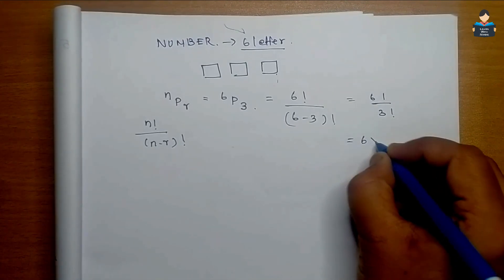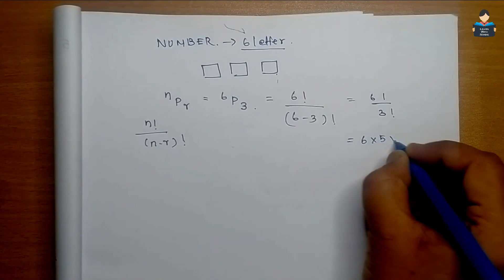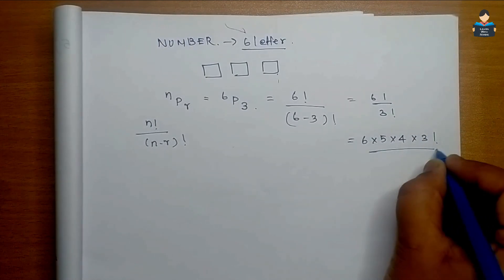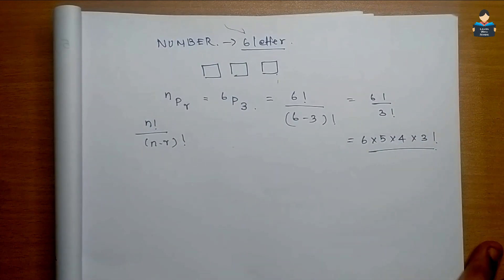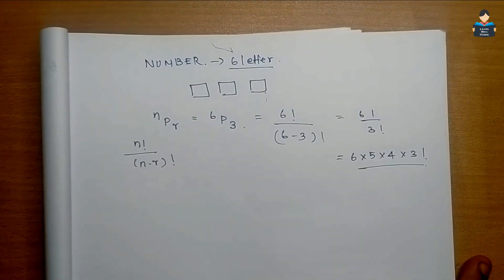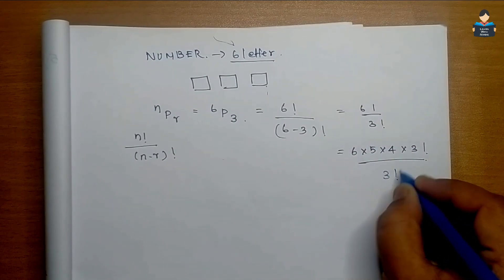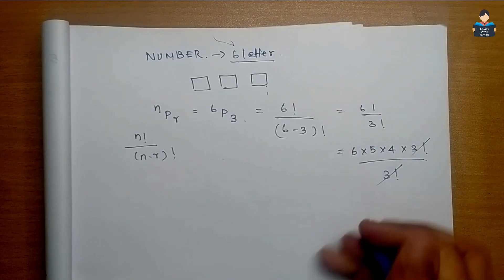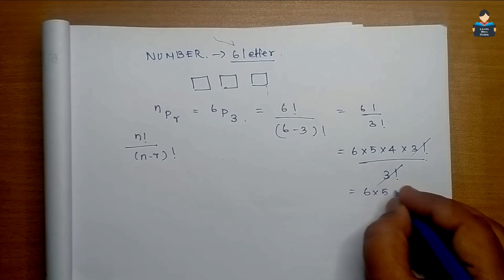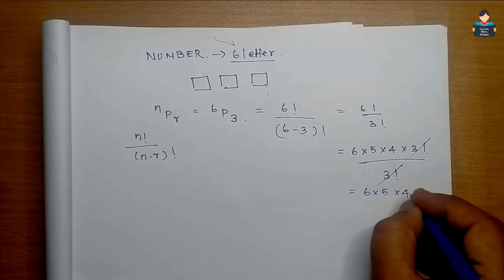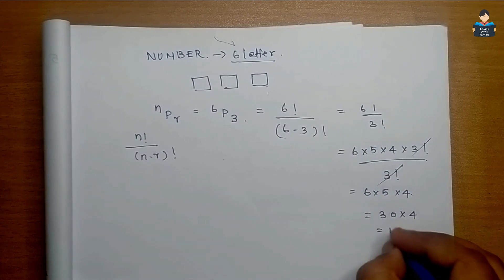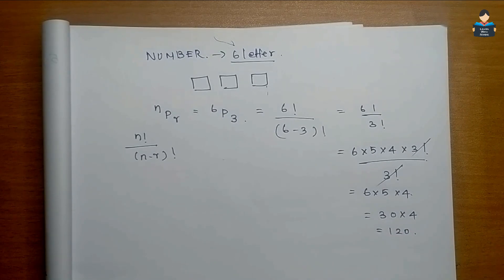That is 6 into 5 into 4 into 3 factorial, divided by 3 factorial. The 3 factorials cancel, giving 6 into 5 into 4, which is 30 into 4, that is 120. So there are 120 ways to arrange the letters.